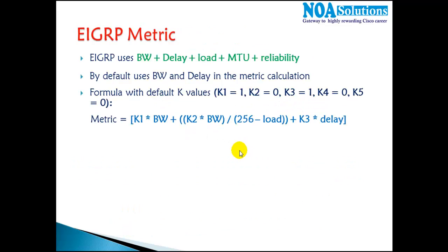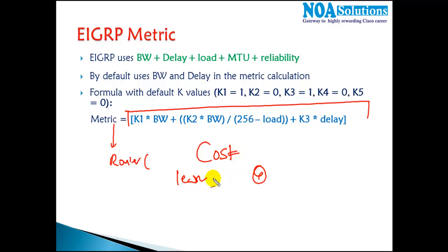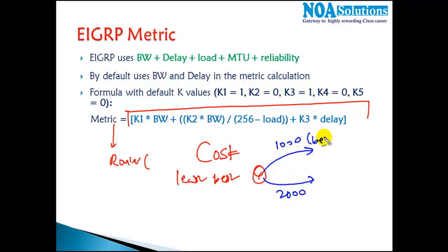We don't need to worry about the detailed formula because the router and EIGRP protocol calculate it automatically. The result is a single number called cost. Whichever route has the least cost is considered the best route. For example, if one route has a cost of 1000 and another has 2000, the route with cost 1000 is preferred. More bandwidth means lower cost — bandwidth and cost are inversely proportional.